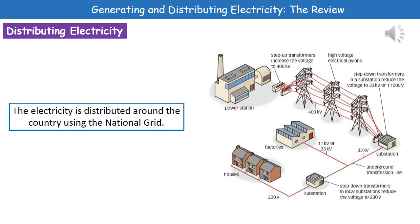It's then transferred from the substation through underground transmission lines — in towns and so forth — on to either factories, where it will use the higher voltages, or to another substation which again has a step-down transformer. That takes the voltage down to just 230 volts, and that's what we then get in our homes.